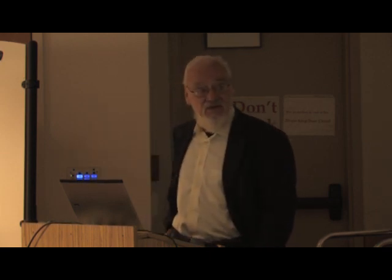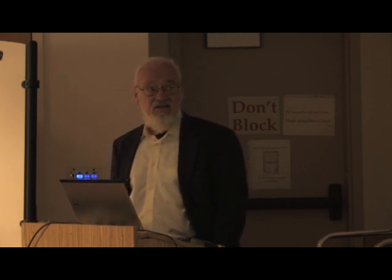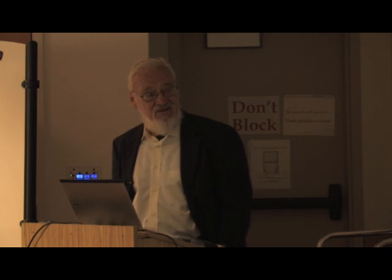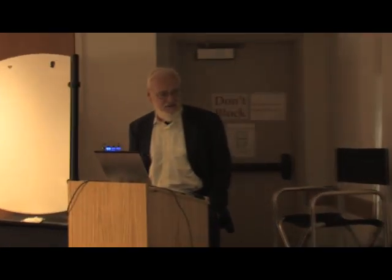I'm going to apply them to signaling games as introduced by David Lewis in Convention. Signaling games for our purposes will have this structure: nature chooses a situation with uniform probability from some set of situations, or states of nature, S1 through SN. A sender observes the situation and chooses a signal from some set of signals T1 through TM. The receiver observes the signal and guesses the situation. This is a slight generalization of David Lewis, who concentrated on the case where N equals M.